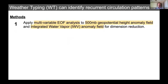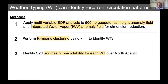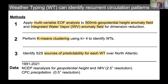Previous research has already identified that weather typing is an established method for identifying recurrent circulation patterns. Our methodology includes: first, applying a multivariable EOF to both 500 hPa geopotential height and integrated water vapor; next, running a k-means clustering loop for four different weather types to identify recurrent circulation patterns; and then analyzing various sources of predictability from local sources and teleconnections. Our data include global geopotential height, integrated water vapor, and CPC precipitation — a global unified gauge-based daily precipitation dataset — to identify land-based extremes.